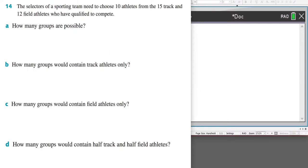So we're going through exercise 10c and in this video I'll be answering question 14. The selectors of a sporting team need to choose 10 athletes from the 15 track and 12 field athletes who have qualified to compete.